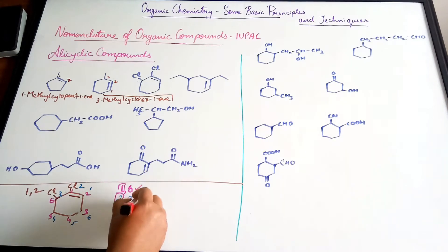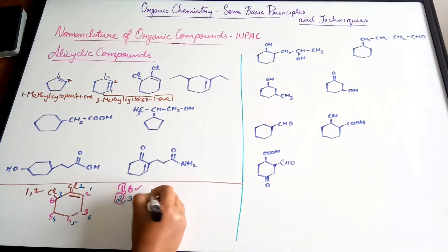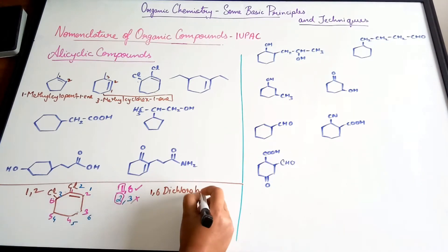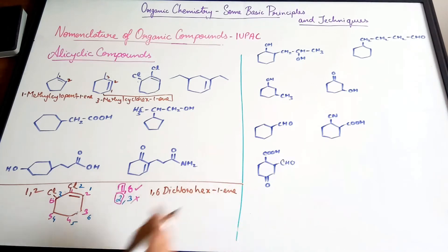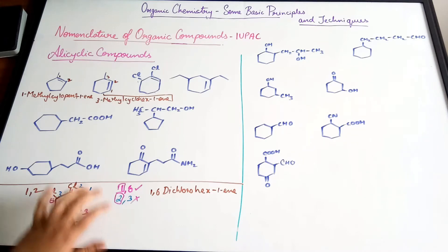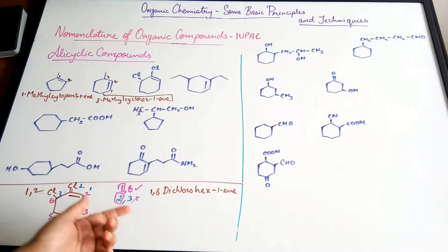This makes the 1,6-numbering correct and the 2,3-numbering wrong. Following the first point of difference rule, the name of the compound is 1,6-dichlorocyclohex-1-ene. Between 1,6 and 2,3, one is obviously less than two, so 1,6 is the correct way of naming this compound.